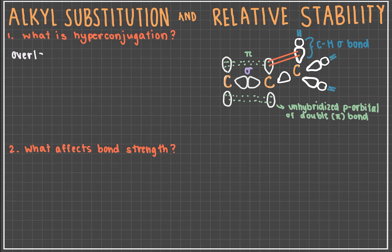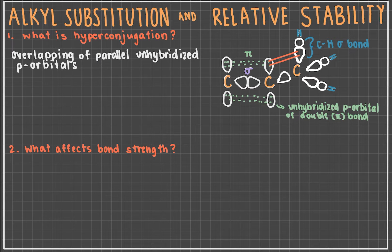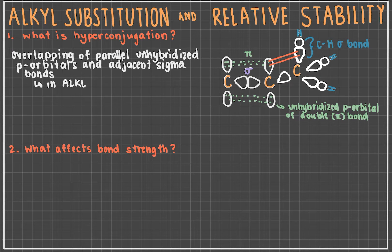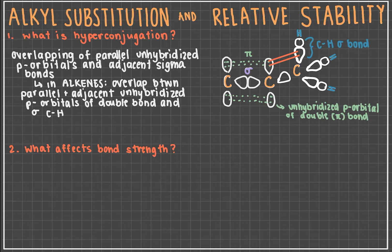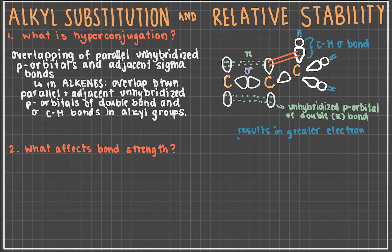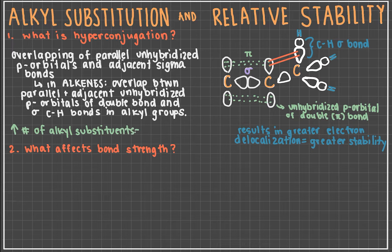So why do more alkyl substituents on double bonds yield more stable alkenes? This can mainly be attributed to two factors: hyperconjugation and bond strength. Hyperconjugation is the overlapping of parallel unhybridized p-orbitals and sigma bonds that are adjacent to them. In the instance of alkenes, this is the overlap of the unhybridized p-orbital of the carbon-carbon double bond and the surrounding parallel carbon-hydrogen sigma bonds in alkyl groups. The overlapping of these orbitals results in greater electron delocalization, meaning that the electron or charge is spread out over a greater atomic distance, thus stabilizing the molecule. The greater the number of alkyl substituents around the double bond, the more delocalization of charge can occur because there are a greater number of sigma bonds adjacent to the double bond.